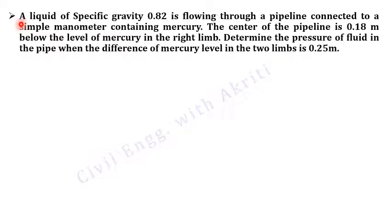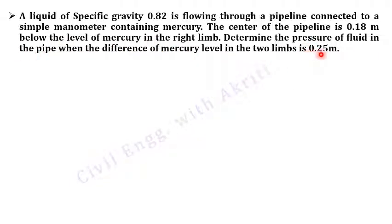The first numerical: a liquid of specific gravity 0.82 is flowing through a pipeline connected to a simple manometer containing mercury. The center of the pipeline is 0.18 meters below the level of mercury in the right limb. Determine the pressure of fluid in the pipe; the difference of mercury level in the two limbs is 0.25. In numericals, we have to make a diagram.